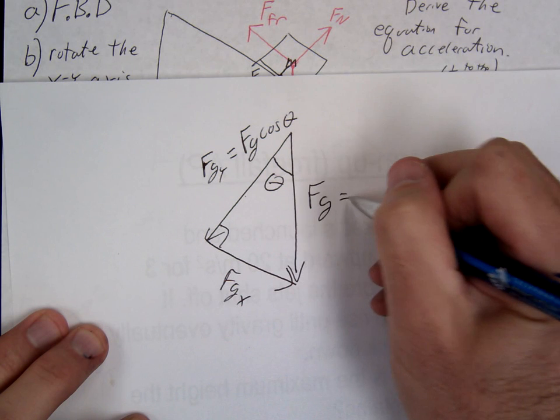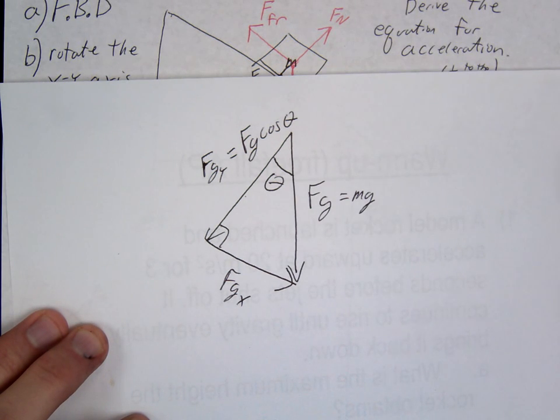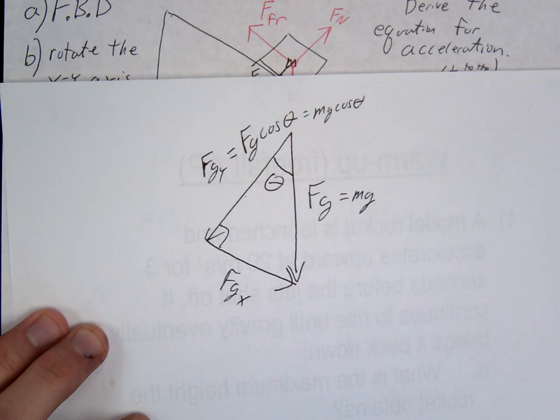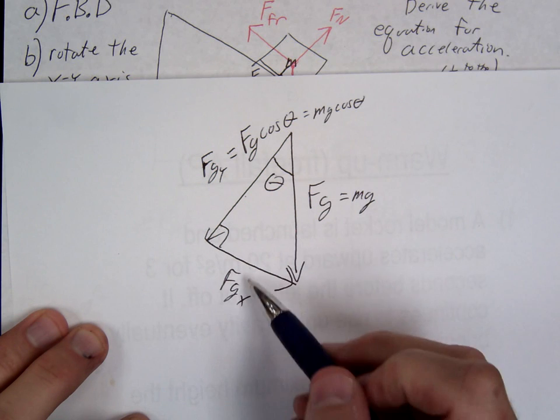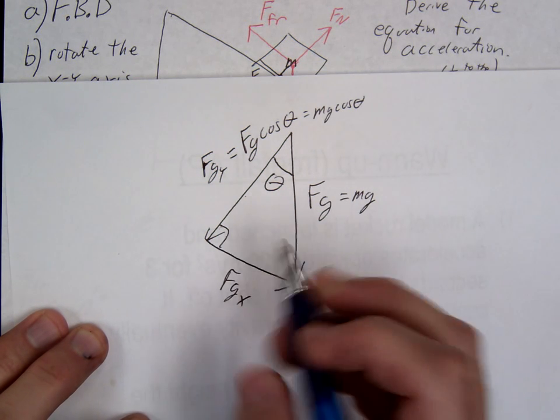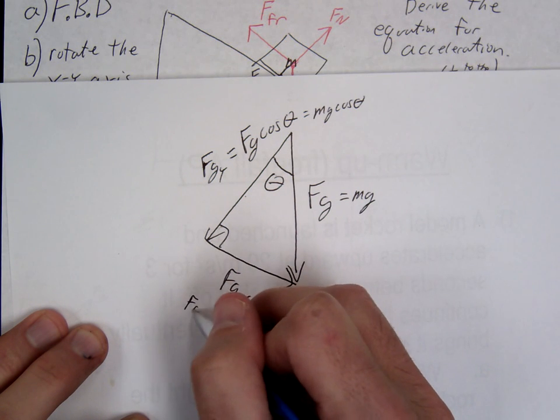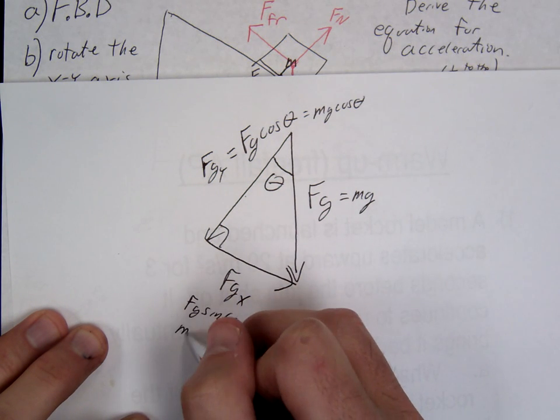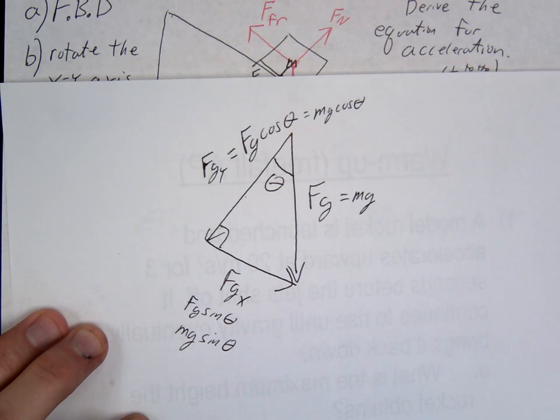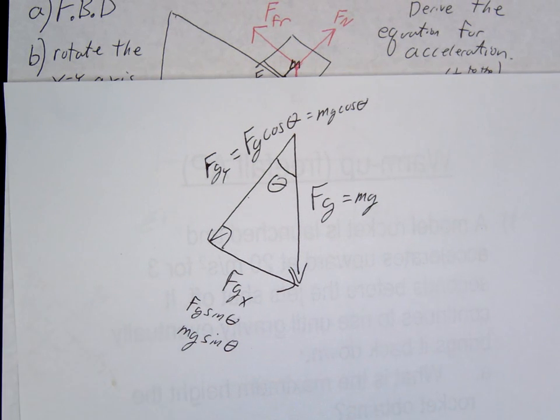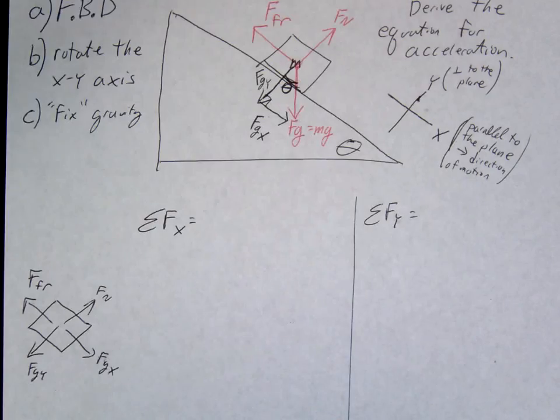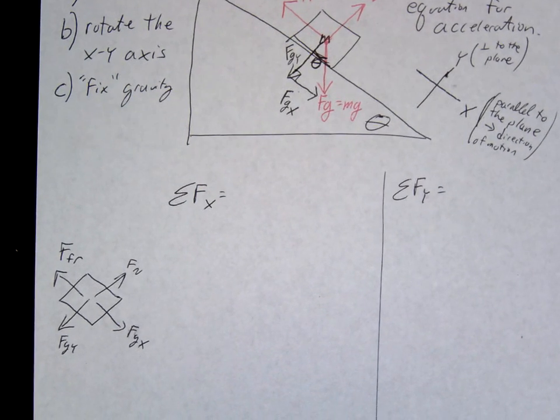Remember, F, G is just M, G. So if you wanted to skip a step, you could call this M, G, cosine theta. And then this guy right here, this is the opposite side of our triangle. What's this going to be? Okay, F, G, sine theta. Or M, G, sine theta. Okay, good, good. So essentially what we've done now is we've fixed our gravity. We could write F, G, X is M, G, sine theta. And F, G, Y is M, G, cosine theta.